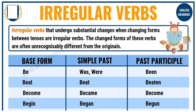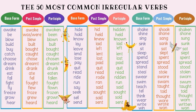Coming to irregular verbs — irregular verbs are those verbs that undergo substantial changes when changing forms between tenses. For example, 'be' is the base form, in simple past it is 'was' in singular and 'were' in plural, and in past participle it becomes 'been'. The changed forms of these verbs are often unrecognizably different from the originals. I have given you some 50 common irregular verbs showing the base form, the past simple form, and the participle form. Please write them in your copies and learn them.